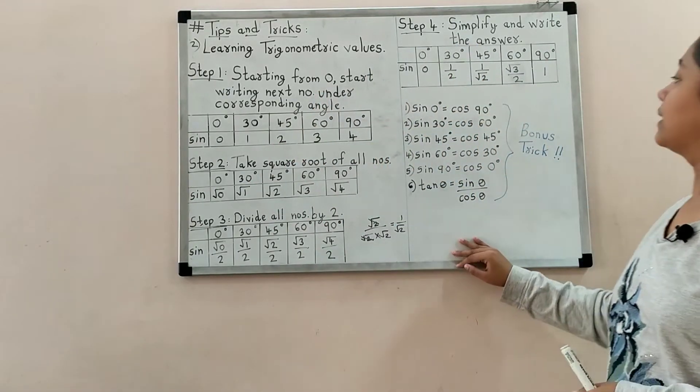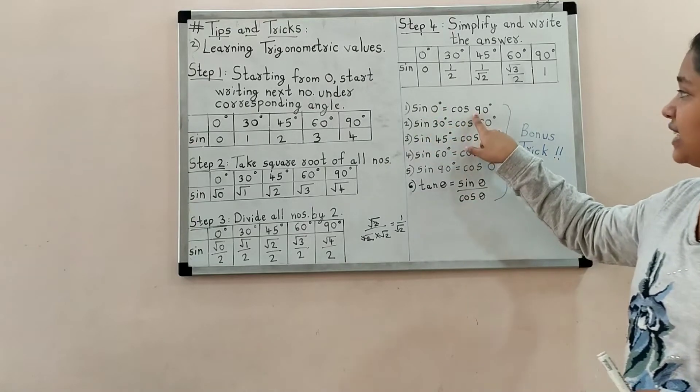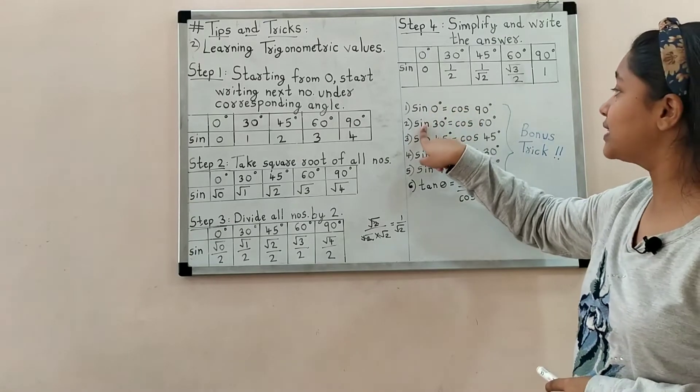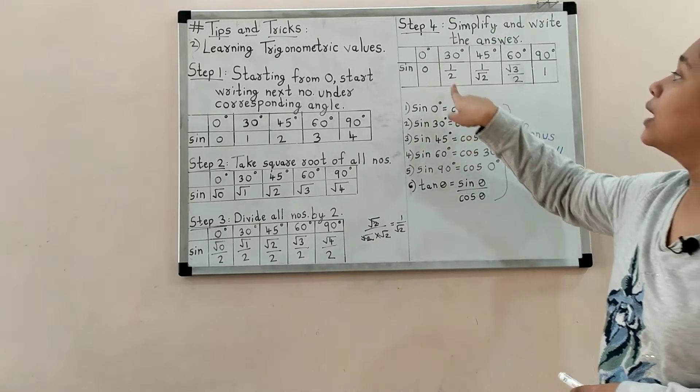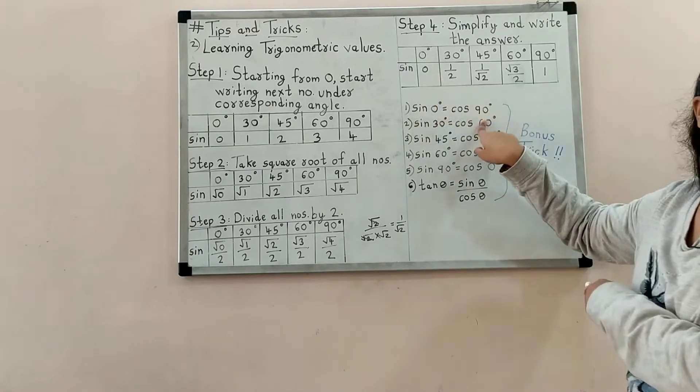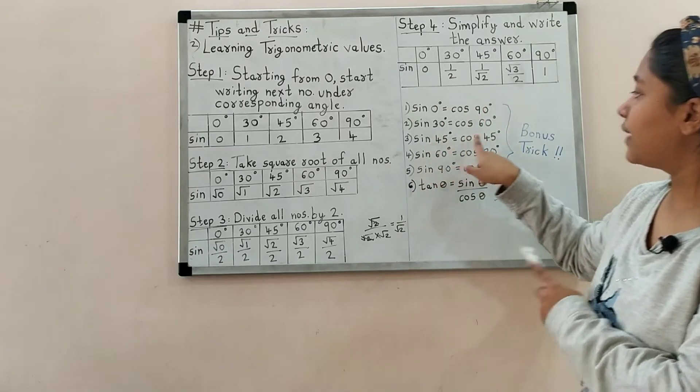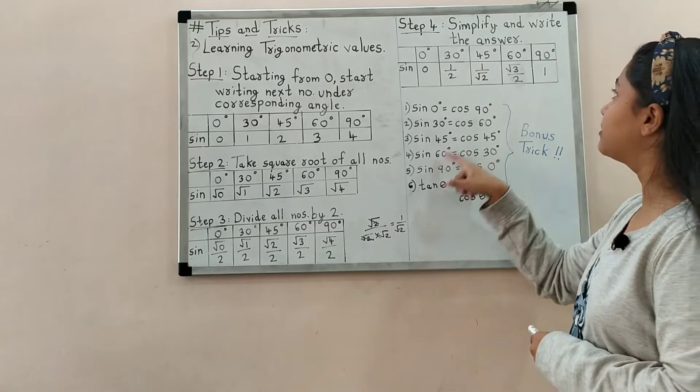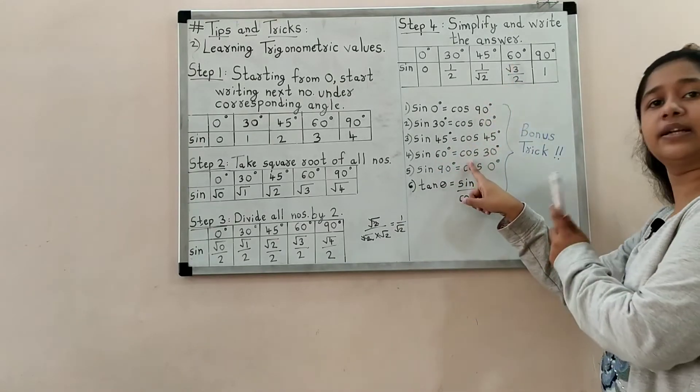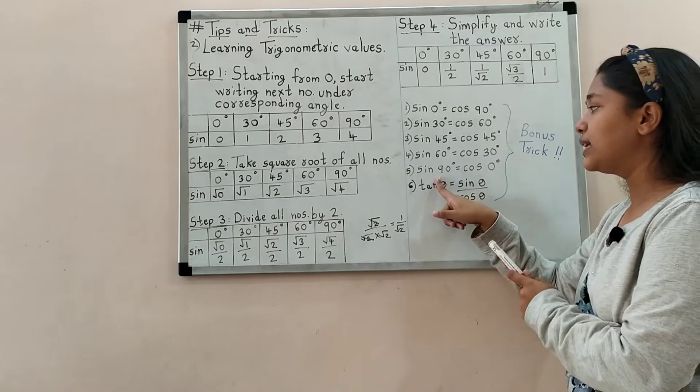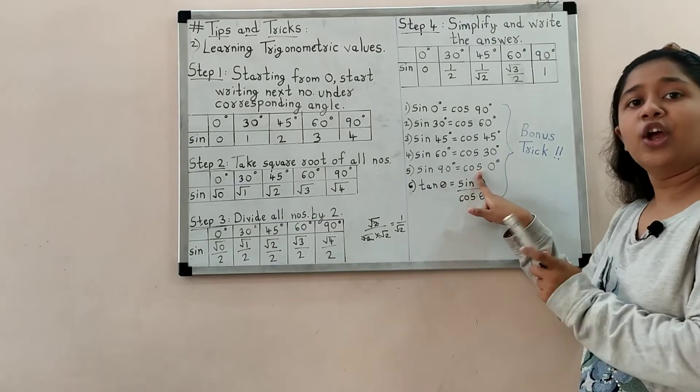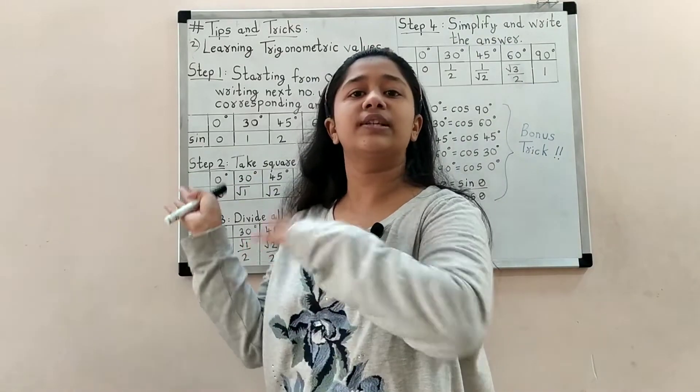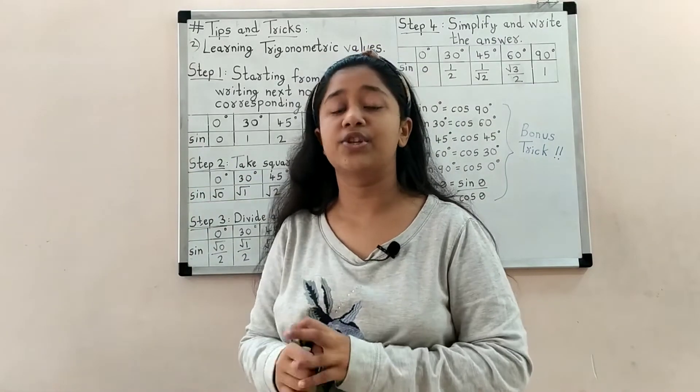This bonus trick: sin 0 equals cos 90 - both are 0. Sin 30 equals cos 60 - both are half. Sin 45 equals cos 45 - both are 1 upon root 2. Sin 60 equals cos 30 - root 3 upon 2. Sin 90 equals cos 0 - both are 1. So all the sin values are the reverse answers for cos.